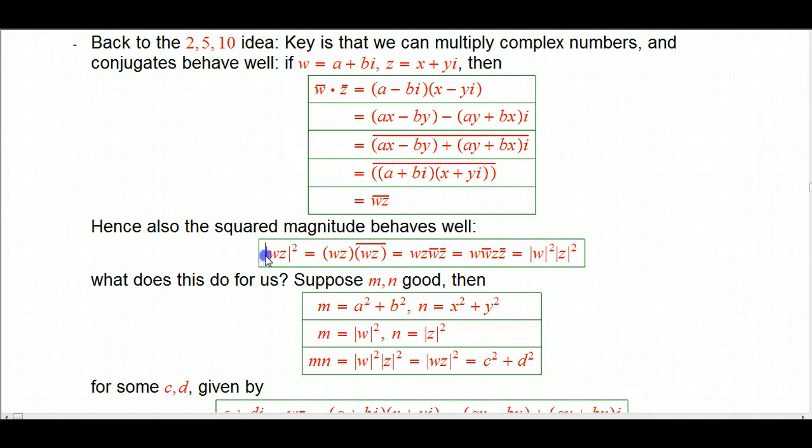Therefore, the squared magnitude, which you can think of as geometry, is built entirely out of the concepts of multiplication and conjugate, and so it's going to behave well too. Namely, the squared magnitude of the product of 2 numbers is the product of the squared magnitudes. So that's nice for consistency and everything has simple relationships to each other.